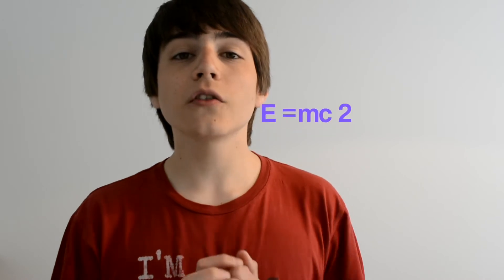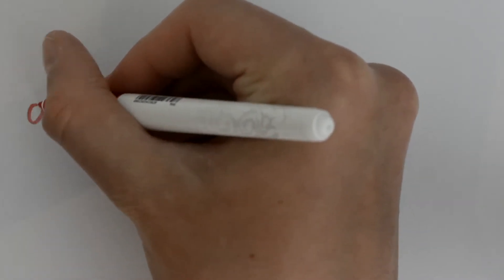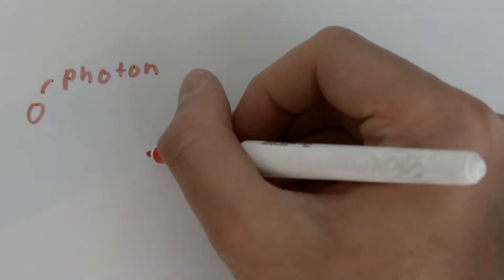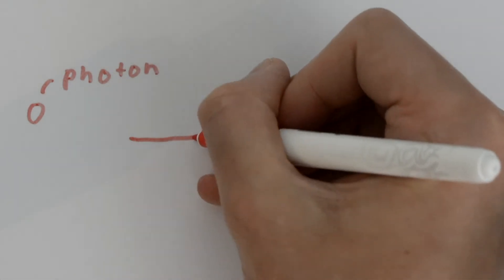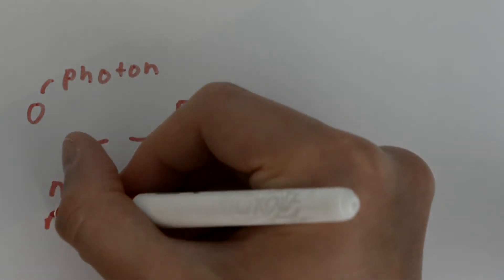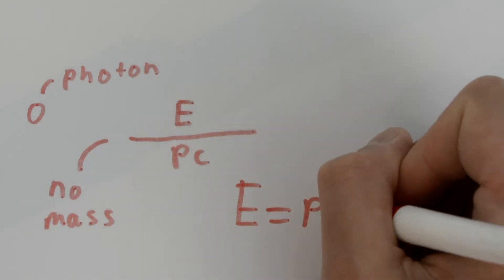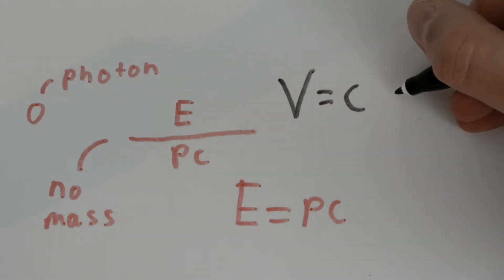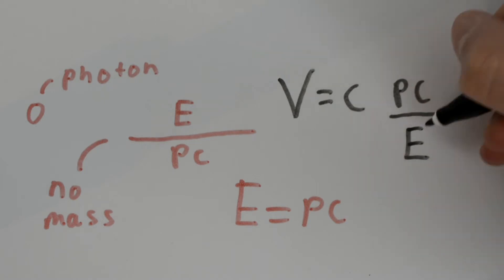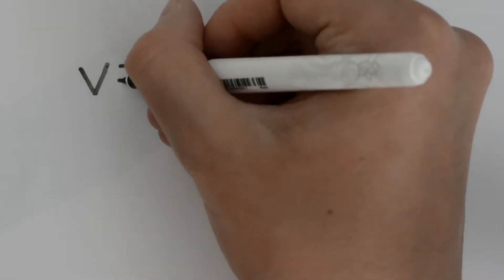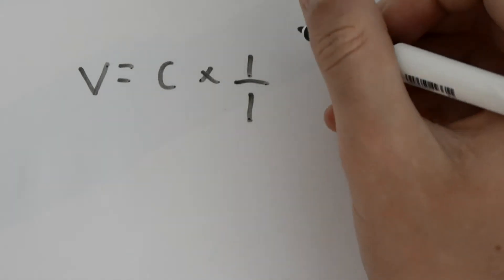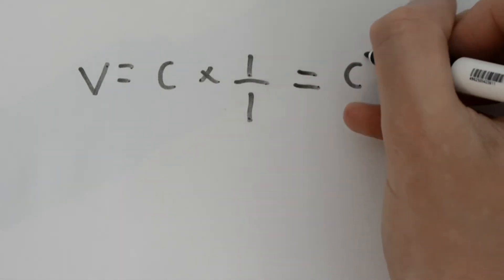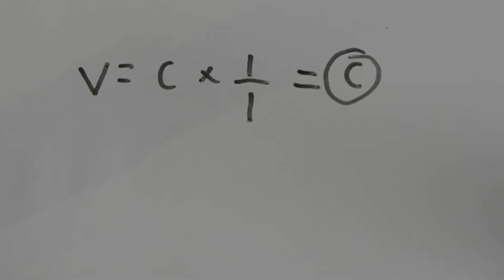A particle that isn't moving would have no momentum, meaning pc squared equals zero, and the equation reduces back to E equals mc squared. A particle that is moving but has no mass — for example, a photon — would have a mass value of zero, so its energy equals its momentum times the speed of light. Its ratio of pc to E is one, so its velocity equals the speed of light times one — the speed of light.